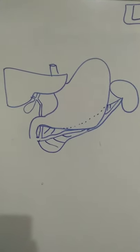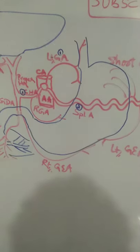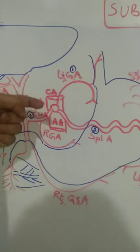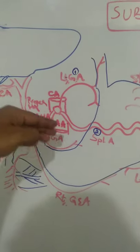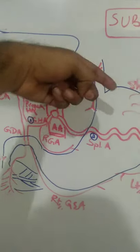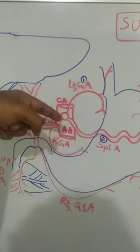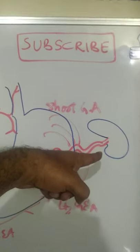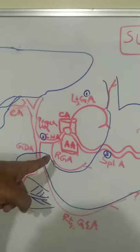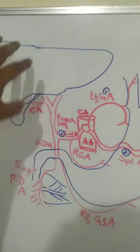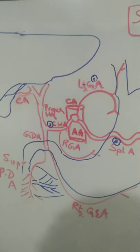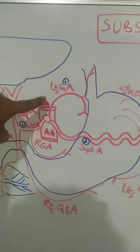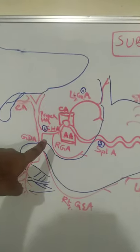Now let's understand the blood supply of the foregut. The blood supply of the foregut is mainly by an artery called the celiac artery, which is a ventral branch of the abdominal aorta. This celiac artery splits into three arteries: number one, the left gastric artery on the left side; number two, the splenic artery, which runs tortuously behind the stomach to reach the spleen; and number three, the common hepatic artery. This is usually a three-mark question: what are the branches of the celiac artery?